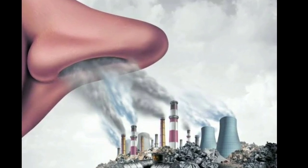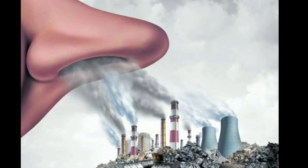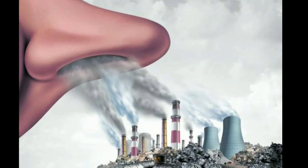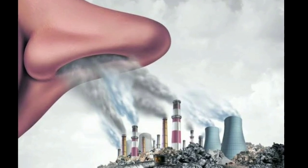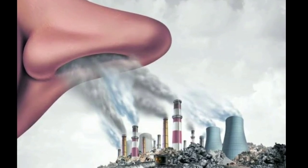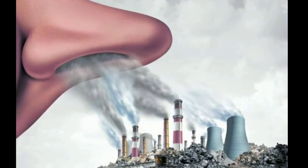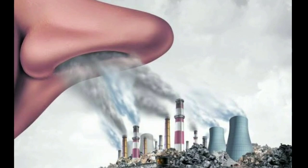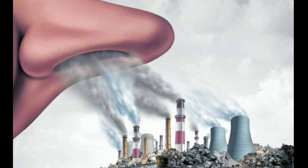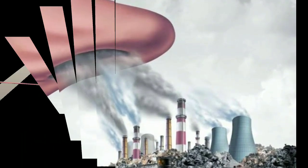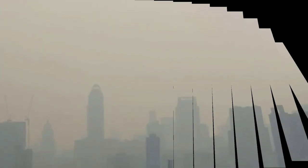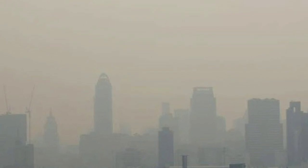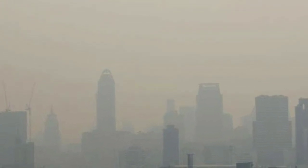Today I am going to be talking about one of the main types of pollution: air pollution. Most air pollution occurs when chemicals and compounds that are not naturally occurring reduce the quality of air and can harm living organisms.